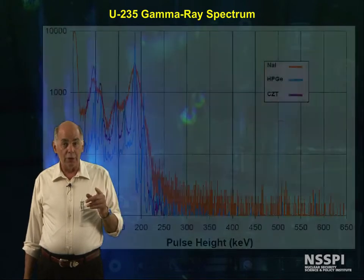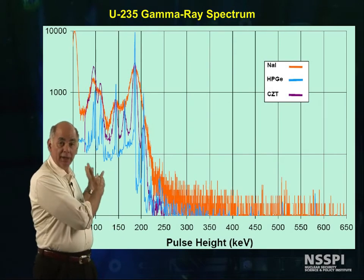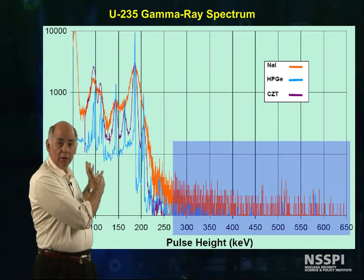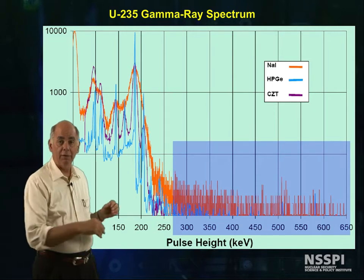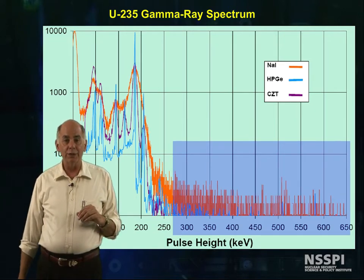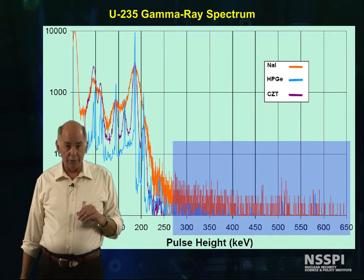The source material for these three spectra is freshly made HEU — we can tell that by the ratio of the 186 line to the uranium x-rays, but also by what's not here: above 250 keV, there are none of the peaks of gammas emitted by the ingrowth of radioactive daughters.